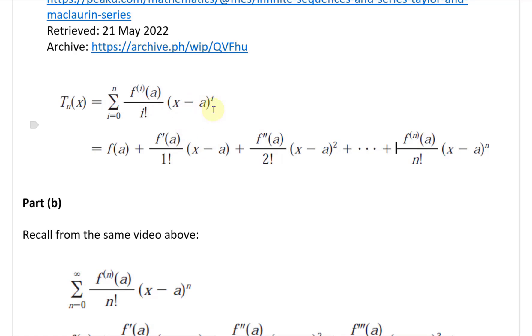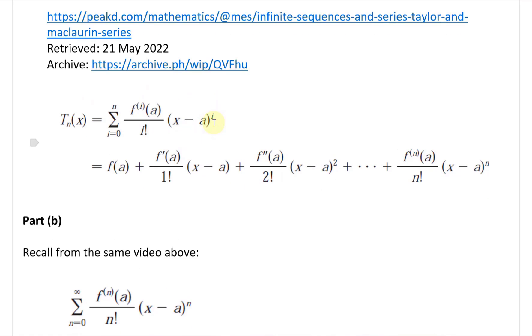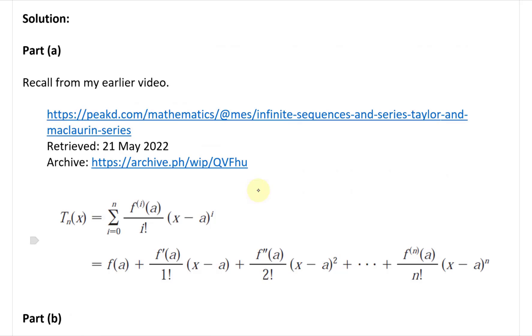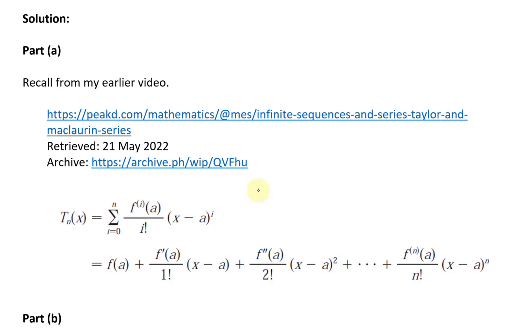When dealing with radius of convergence, you're centered about that point A, and the radius extends outward like a circle of convergence — hence the phrase 'centered.'